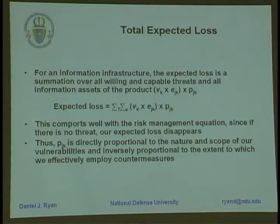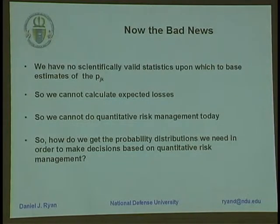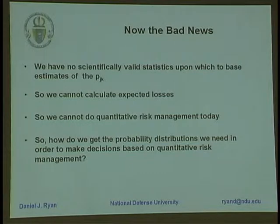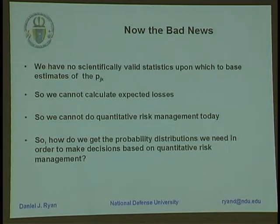But there's bad news inherent in all of this: we don't have any way to get at those probabilities based on currently available information. I know of no statistically valid information that's been collected that would give us an understanding of how likely we are to be successfully attacked. There's a lot of bogus information out there, like the much-touted CSI-FBI survey that gets floated over and over again. It says right in the survey that it's not a scientific survey and shouldn't be used in any sort of statistical approach. It tells us that something's going on, but doesn't tell us how much of it's going on.